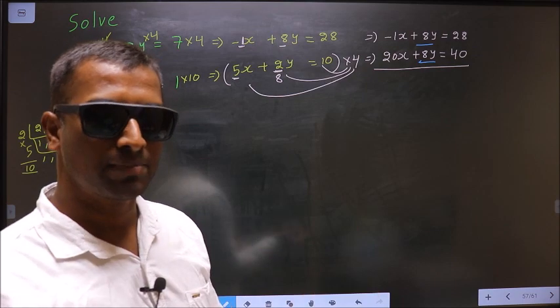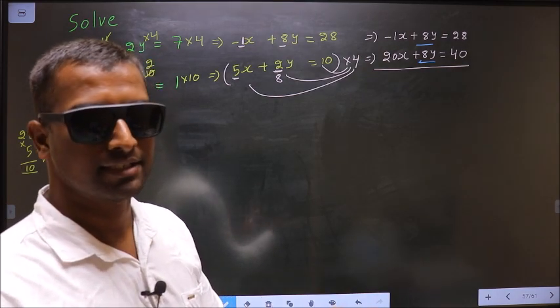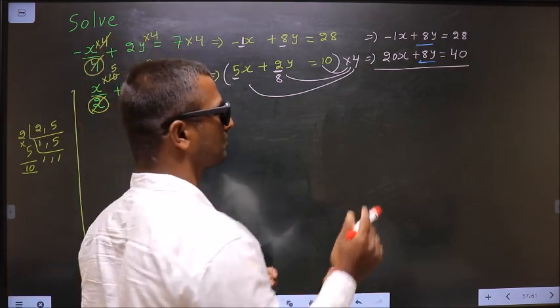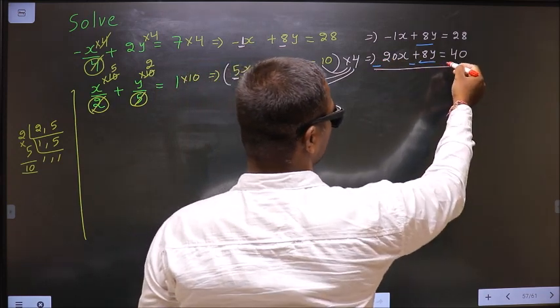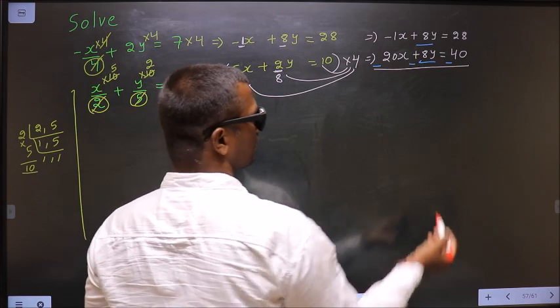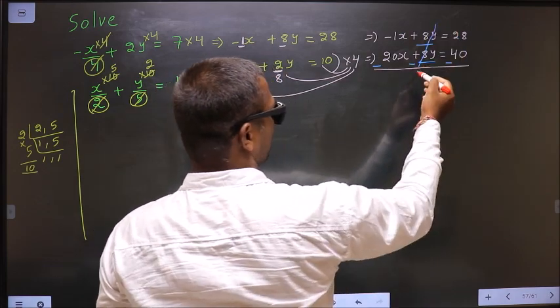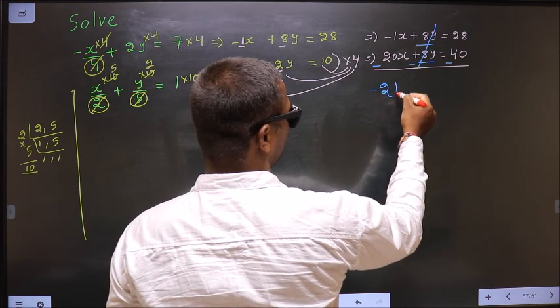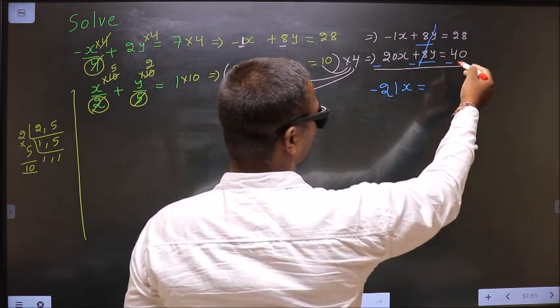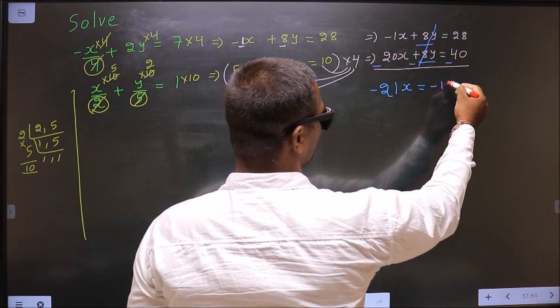So whenever you subtract, change the signs. So let us change. So here it is plus, make it minus. Here it is plus, make it minus. Here it is plus, make it minus. So now this cancels out. Here -1x - 20x is -21x equal to 28 - 40 is -12.